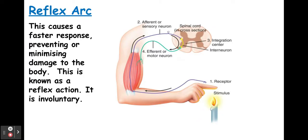The first one we'll take a look at is the reflex arc. You should know this from GCSE. We have a receptor that detects the stimuli. This sends an impulse down the sensory neuron. The sensory neuron connects to a relay neuron. The relay neurons are found within the central nervous system, which is the spinal cord and the base of the brain. This then connects to a motor neuron which is attached to an effector, which could be a muscle or a gland, which does something to cause a change or response.